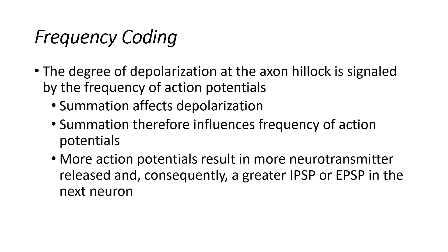We talked about divergence and convergence — the splitting of signals versus the convergence of signals coming in from different neurons. We also spoke about summation, which is really a review: temporal summation and spatial summation. And then the third thing we want to look at is called frequency coding, something I've been alluding to as we've gone through the action potential.